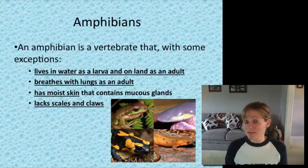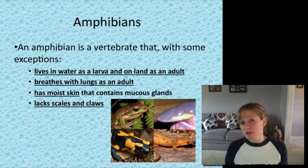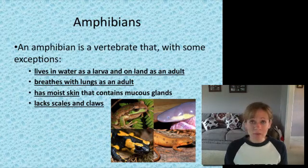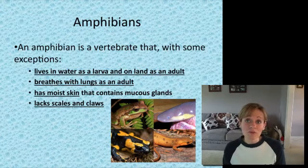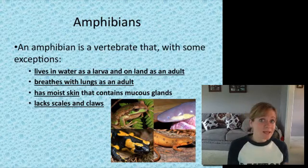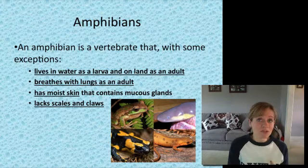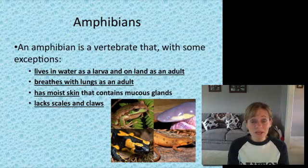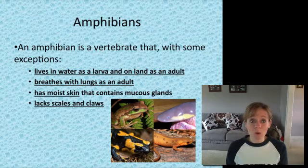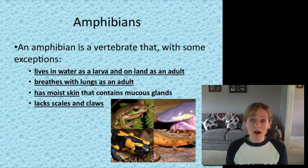That pretty much ends it for fish. Know those three main groups, and know about reproduction, the circulatory system, and respiration. Now we're going to move into amphibians, because way back hundreds of millions of years ago, fish did evolve into amphibians. Some sort of land environment opened up, an opportunity for them to go onto land, and they adapted through natural selection.